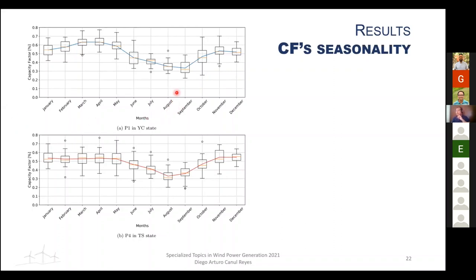Outlier points in the box plots represent atypical values that occur perhaps once or twice per year. Upper outliers can be associated with periods of sustained winds within the power curve range that increase the capacity factor. Lower outliers can be caused by winds outside the cut-out speed or velocities too low for the turbine to operate.